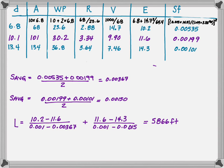To find the total length, we're going to take 10.2 minus 11.6, that's the energies, divided by 0.001 minus my average of 0.00367. And I'm going to add it to the next set of data, 11.6 minus 14.3 divided by 0.001 minus 0.00150. And now I get a length of 5,866 feet.